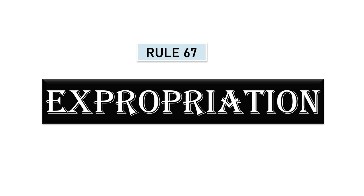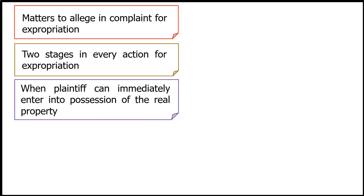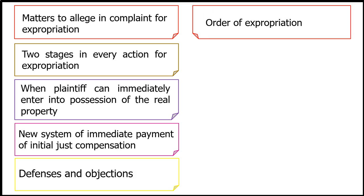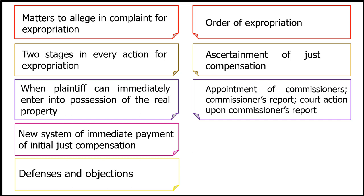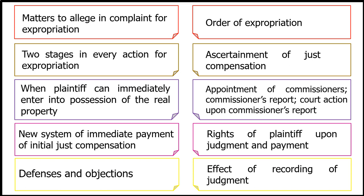This video will discuss Rule 67, which covers expropriation. The topics include: matters to allege in a complaint for expropriation, the two stages in every action for expropriation, when the plaintiff can immediately enter into possession of real property, the new system of immediate payment of initial just compensation, defenses and objections, order of expropriation, ascertainment of just compensation, appointment of commissioners, the commissioner's report, court action upon the commissioner's report, rights of the plaintiff upon judgment and payment, and the effect of recording of judgment.